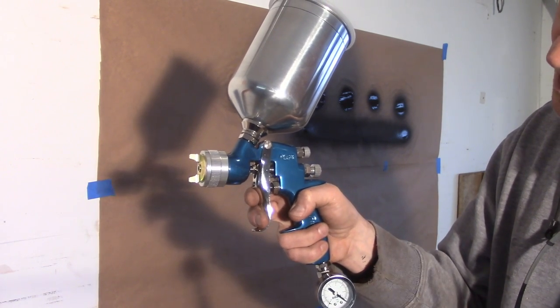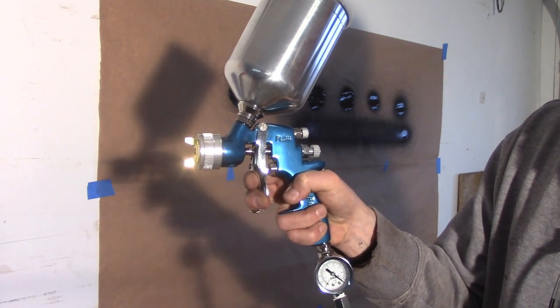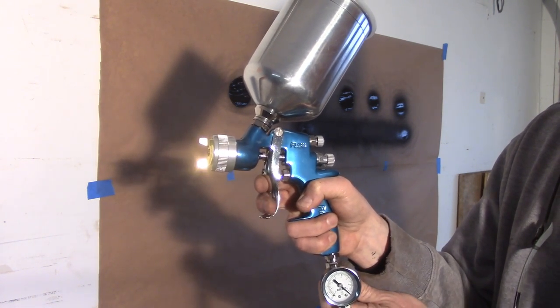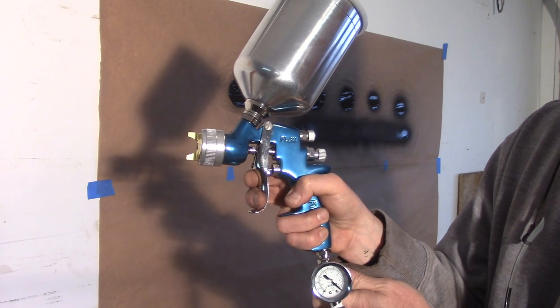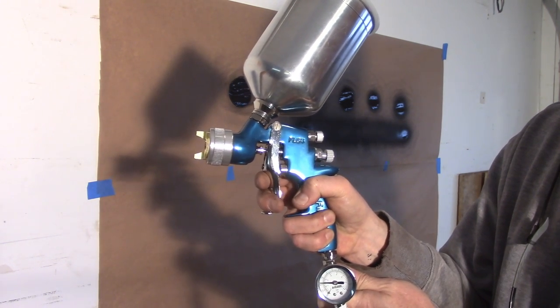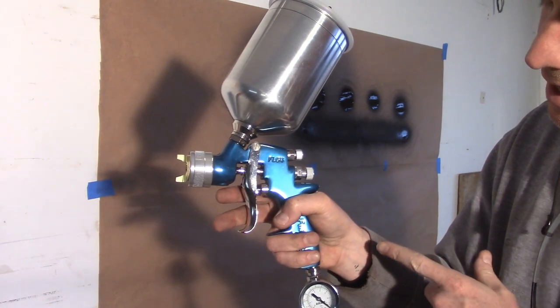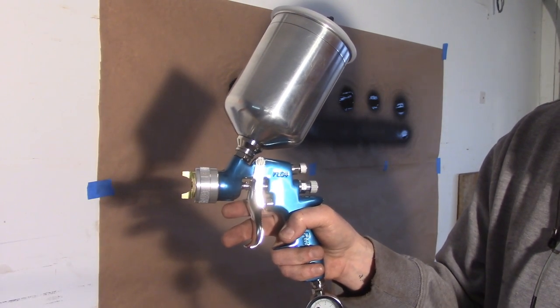So you pull the trigger a little bit on this guy, not all the way, and you'll get air to flow but not paint. So when I pull it, you'll notice that the gauge will go down and you want to set this for about 23 pounds with this knob. You're not going to be able to hear anything because of the noise it's going to make, but you can see the needle move. So that's the air pressure adjustment and you want it about 23 pounds according to the manual.